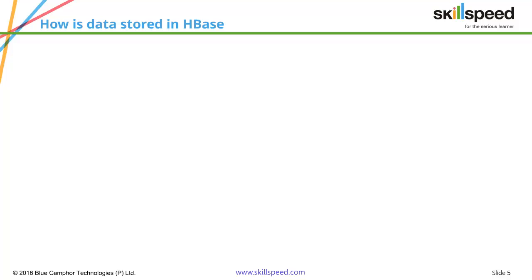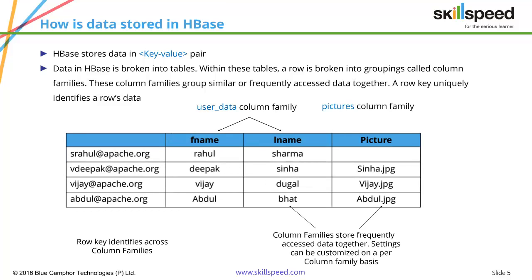The first thing you need to understand is how HBase stores data, or how the schema of HBase looks. HBase divides the data into tables, so the top-level hierarchy is called tables, and data is stored in the form of key-value pairs. For every data that you're inserting into an HBase table, you must have something called a row key. The row key — here shown as email addresses of different users — uniquely identifies the data you're inserting into the table.